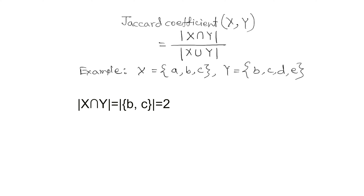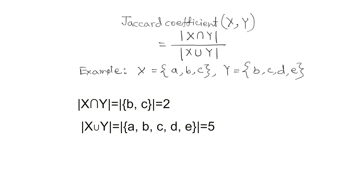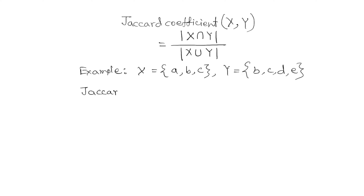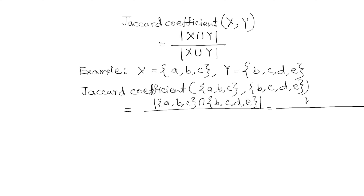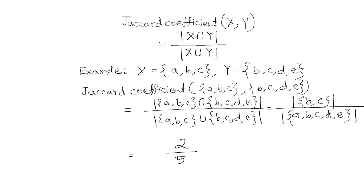The union of x and y contains all the unique items in x and y. That is, x union y equals {a, b, c, d, e}, and the union has five elements. Therefore, for x = {a, b, c} and y = {b, c, d, e}, the Jaccard coefficient is the length of x intersection y divided by the length of x union y. The length of the intersection is two and the length of the union is five. Therefore, the Jaccard value is 2/5, which is 0.4.